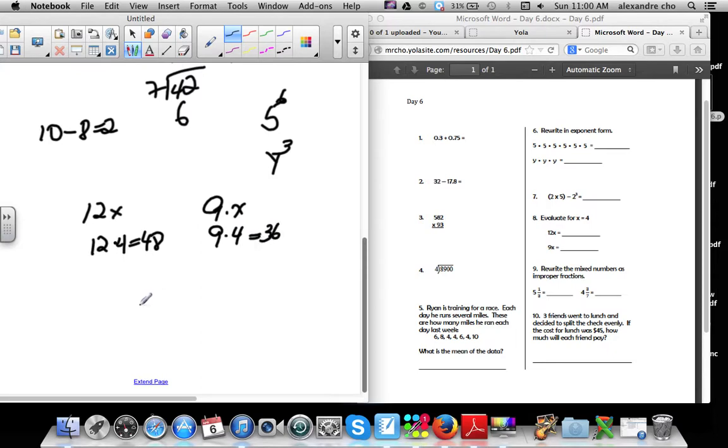Rewrite as a mixed number or improper fraction. So the first one is 5 and 1/3 gives you 16 over 3. And 4 and 3/7 gives you 31 over 7.